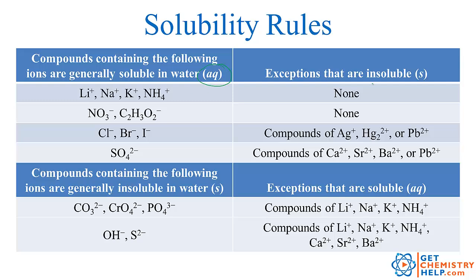There are a few exceptions that are solids. Lithium, sodium, potassium, and ammonium have no exceptions — always aqueous. Any nitrate or acetate compound is almost always aqueous with no exceptions. Chlorides, bromides, and iodides are also aqueous, but there are a few exceptions: if you have silver, mercury(I), or lead combined with chloride, bromide, or iodide, those would be solid. But every other chloride, bromide, and iodide would be aqueous.